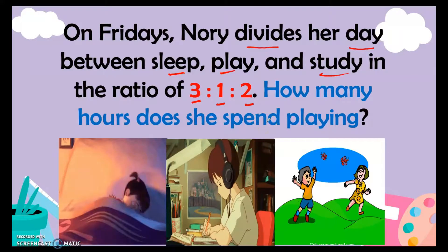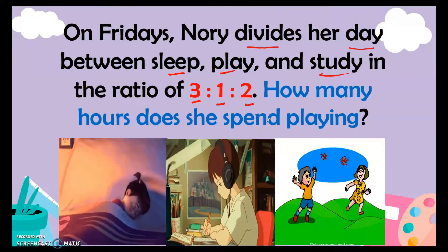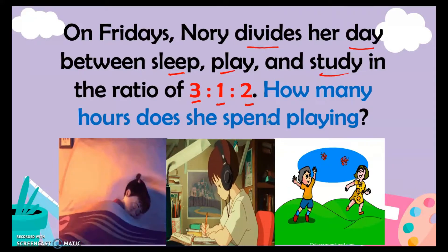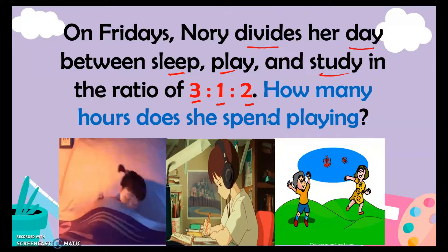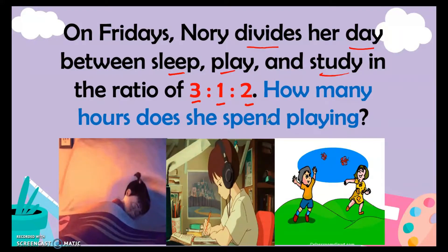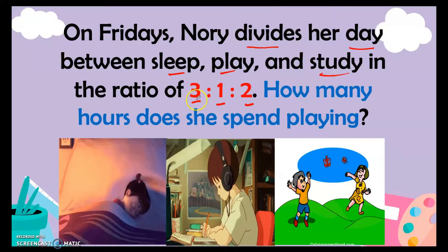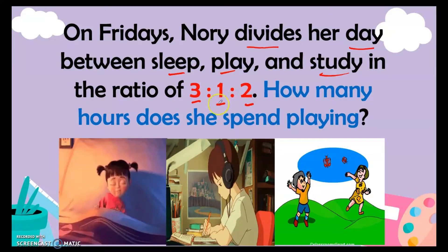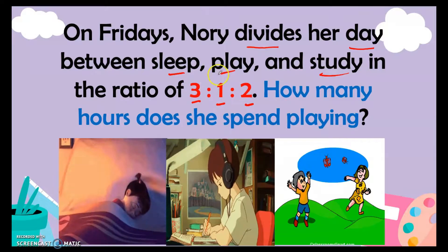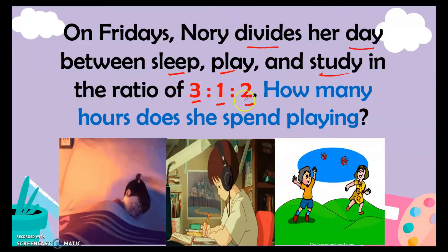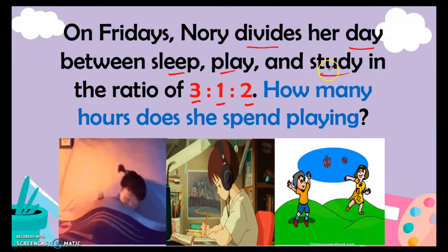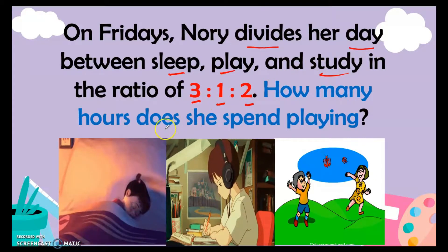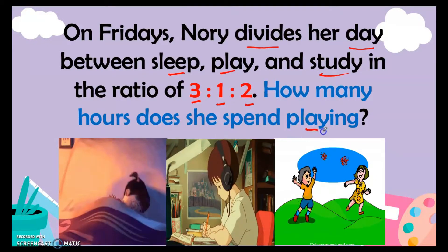This is a partitive proportion — a whole is divided into parts proportional to the given ratio. Here, 3 parts are for sleep, 1 part is for play, and 2 parts are for study. The question is: how many hours does she spend playing?